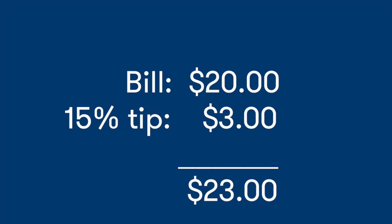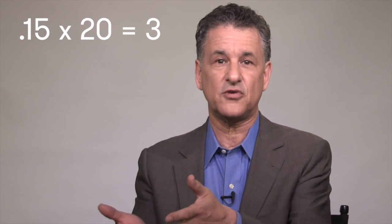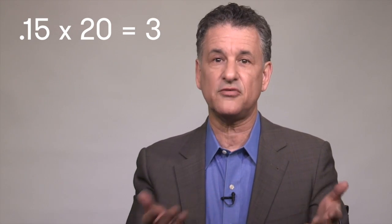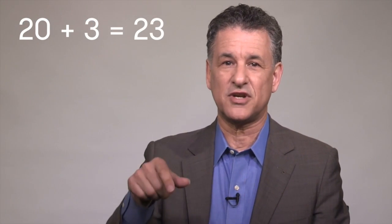Mathematically, what you're probably doing in your head, on a napkin, or on your phone is calculating 0.15 — that's the 15% — times $20, which equals $3. You then add the $3 to the $20 to get $23.